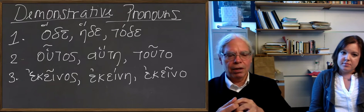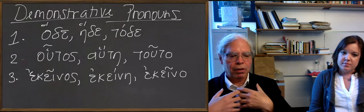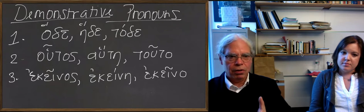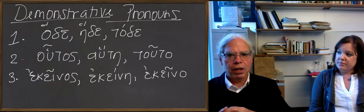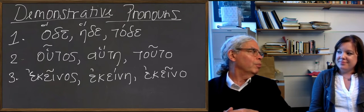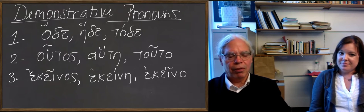But you're going to always find that hāde is used of something that a speaker is talking about as near to him or herself. And likewise, houtos, and there are places in ancient Greek where houtos just means you there, okay? It's the second person pronoun. So it really works that way.